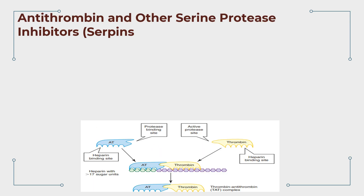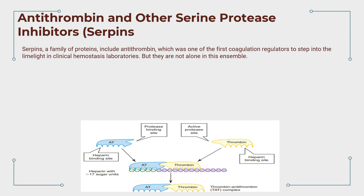Serpins are a fascinating family of proteins, each with a unique role in the intricate dance of coagulation. Antithrombin was one of the first coagulation regulators to step into the limelight in clinical hemostasis laboratories.